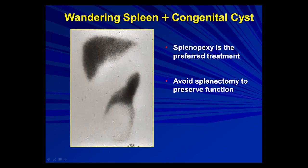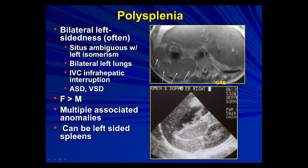Here's a wandering spleen on an old nuclear medicine study — the spleen is coming down into the pelvis and also has a space-occupying lesion with a rim sign, which is a congenital splenic cyst — sort of two congenital abnormalities together. Polysplenia often has bilateral left-sidedness, bilateral left lungs, various vascular abnormalities including IVC with intrahepatic interruption, ASD, VSD. On MR and ultrasound you can see multiple lesions with the same texture expected for the spleen — multiple splenules or spleens.